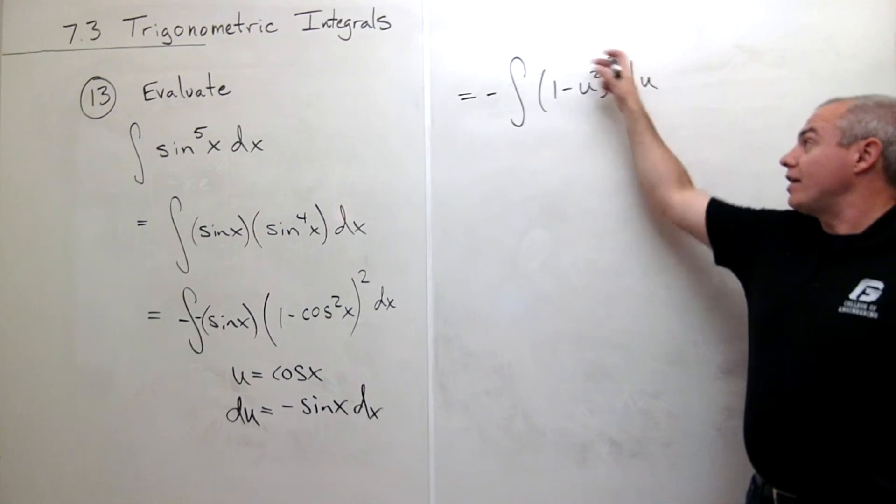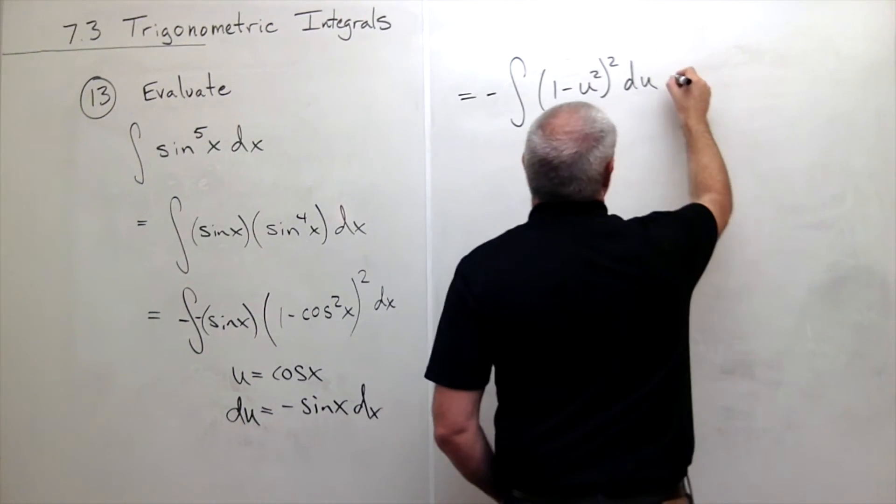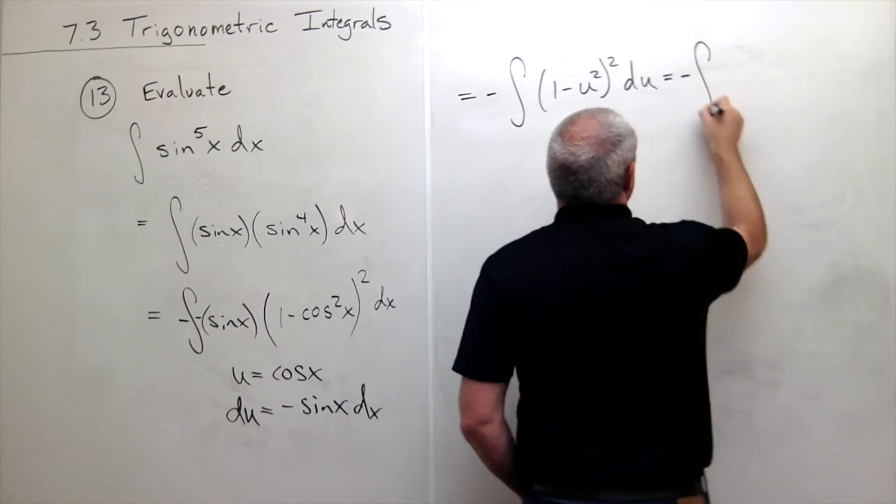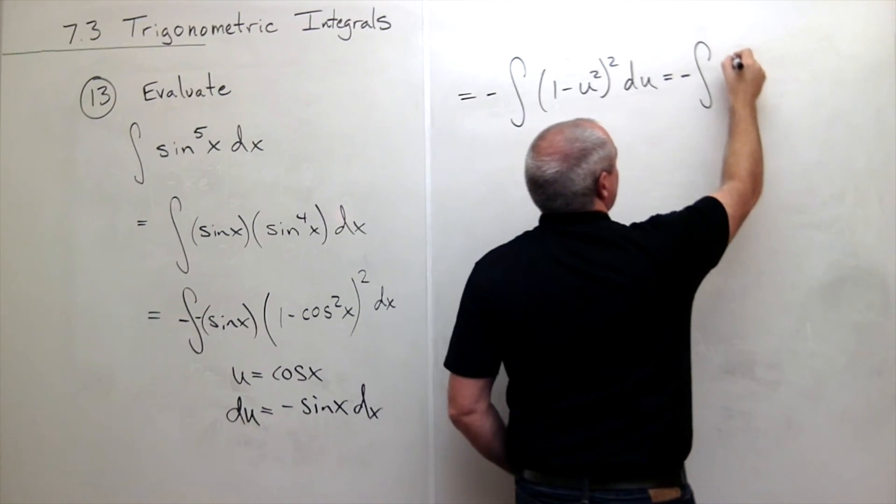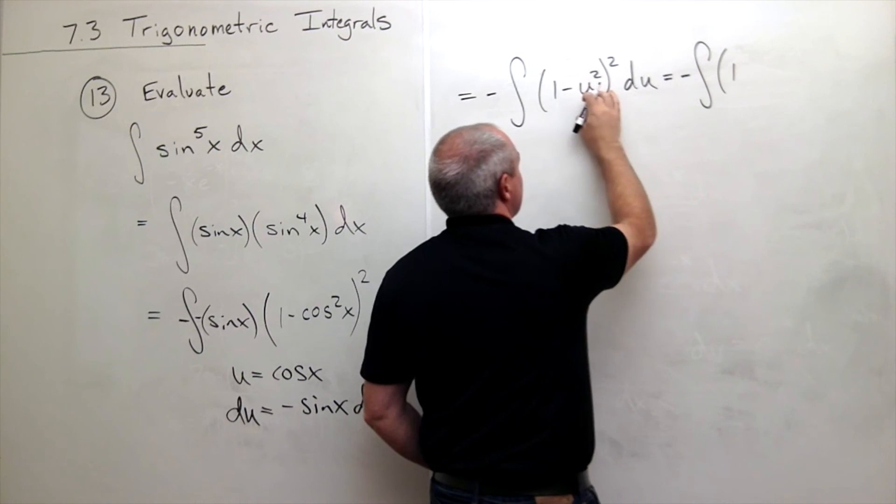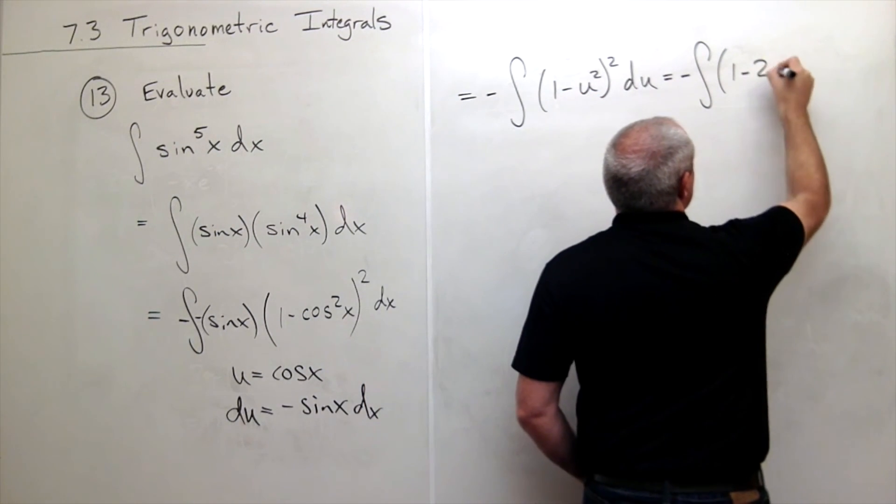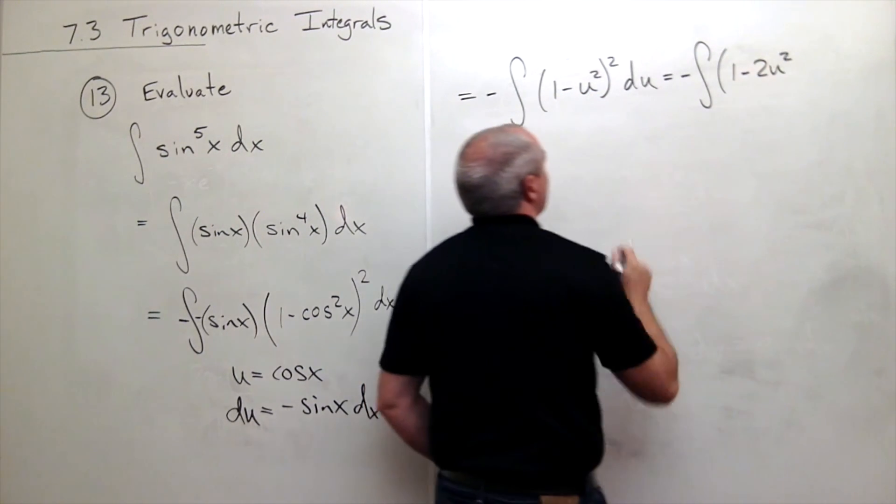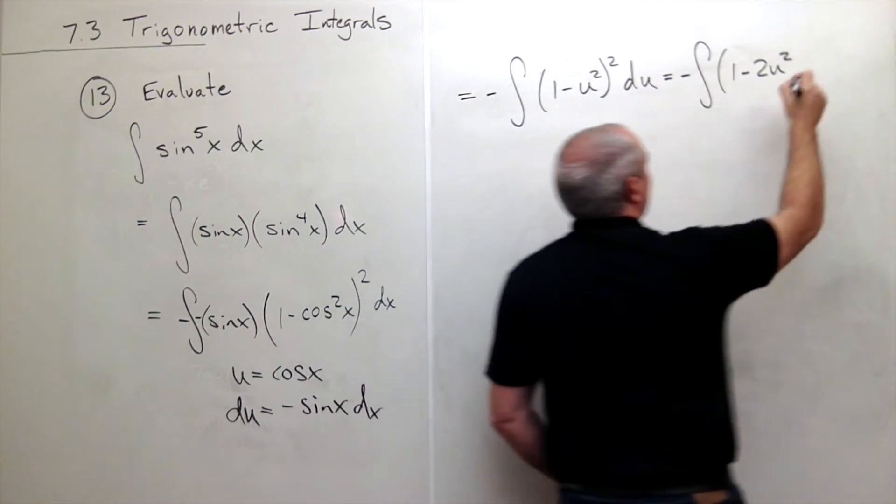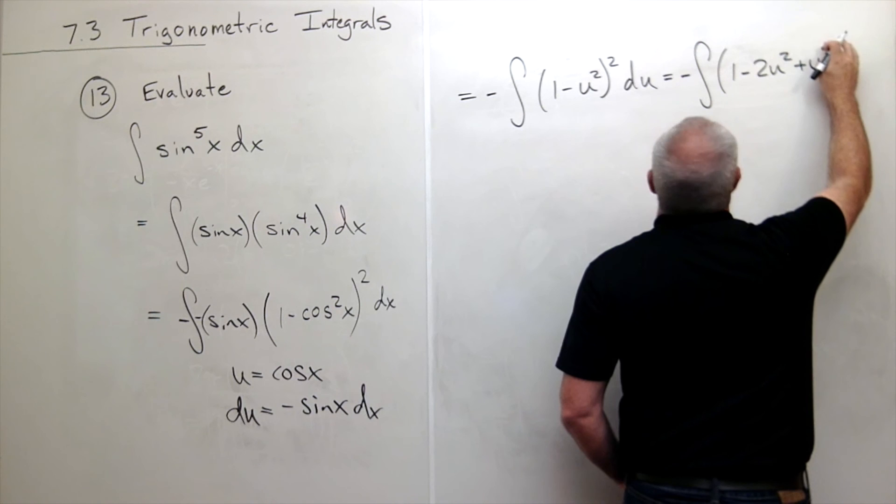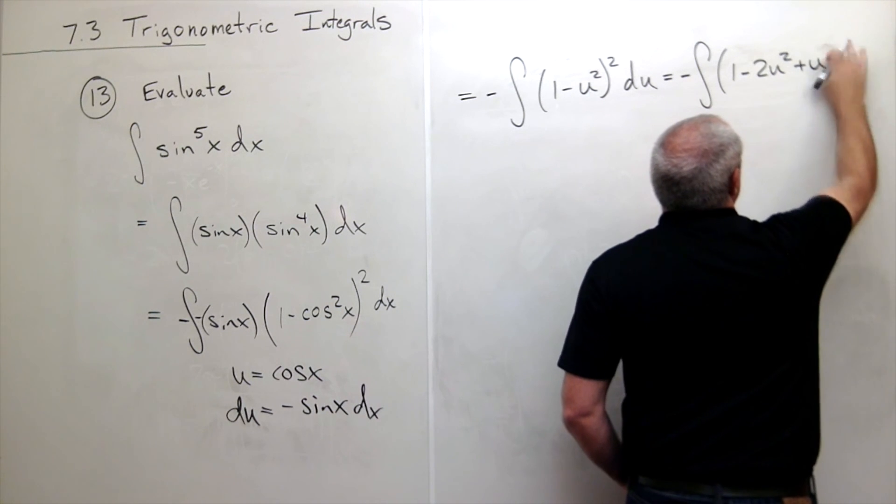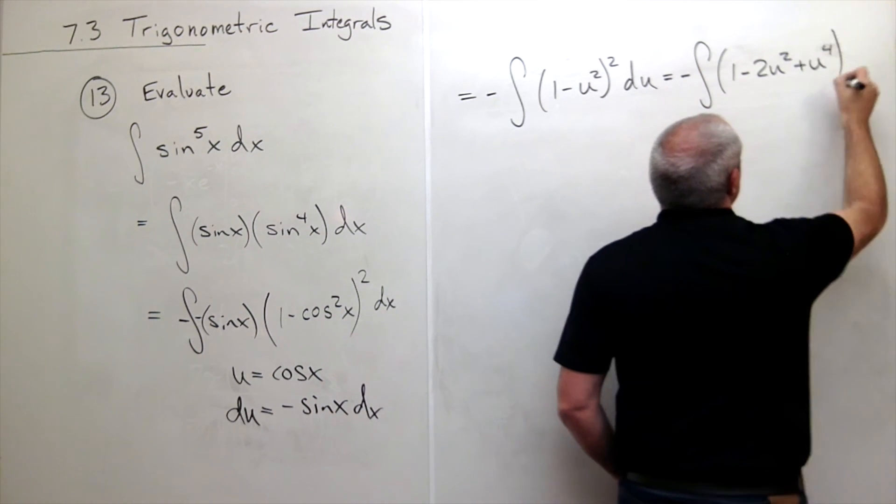Now let's square this out. I get negative integral of one squared is one. Then I get two times the first times the second, which is minus two u squared. Then I get the second guy squared, which is plus u to the fourth du.